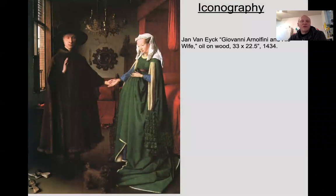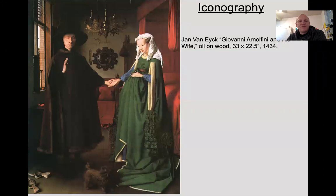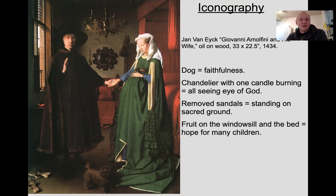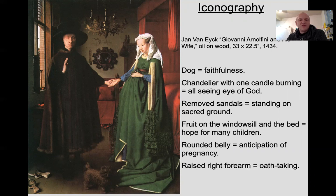This is one painting I do want you to know. It's called the Arnolfini Wedding Portrait, or Giovanna Arnolfini and His Wife — purportedly the first complete oil painting ever. There's a lot going on here. In this culture, images of dogs represent faithfulness; the chandelier with one candle burning is the all-seeing eye of God; the removed sandals mean you're standing on sacred ground; fruit on the windowsill and the bed represents hope for children; the rounded belly signifies anticipation of pregnancy; and the raised right forearm indicates oath-taking. All these little symbols and icons come together to build the whole picture.